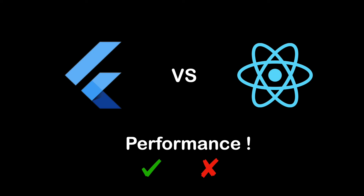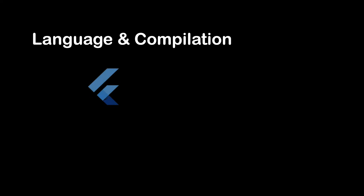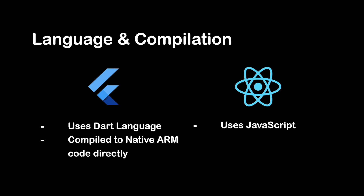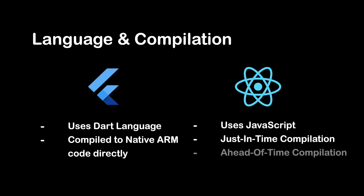We will focus on comparing the framework itself rather than external factors such as project complexity or developer skills. Firstly, language and compilation. Flutter uses Dart as its programming language, and Flutter applications are compiled directly to native ARM code for better performance. On the other hand, React Native utilizes JavaScript and relies on a JavaScript bridge to communicate with native modules. While just-in-time compilation is possible for development, production releases can use ahead-of-time compilation for better performance.